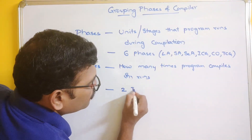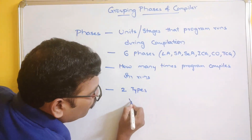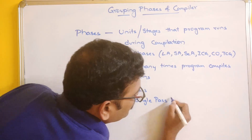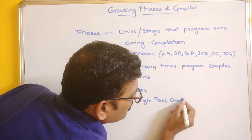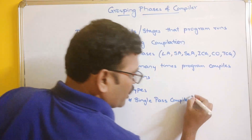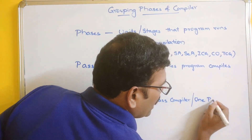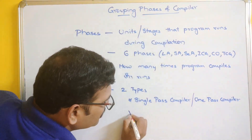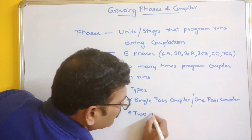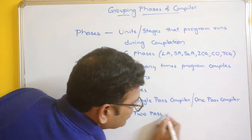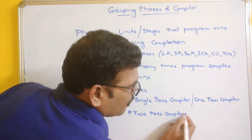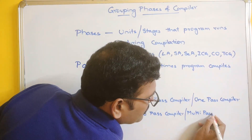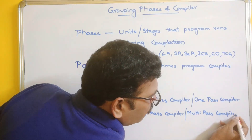Passes are of two types. The first is a single pass compiler, also called a one pass compiler. The second category is a two pass compiler, also called a multi-pass compiler.